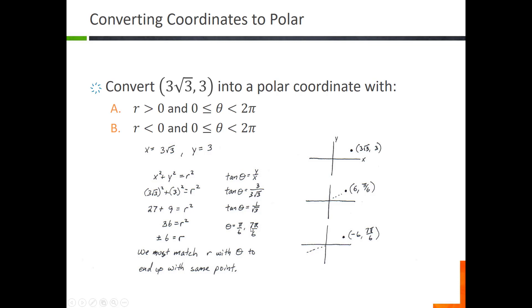We have two radius values and two angle values, and we need to know which goes with which. The original point three root three comma three is in the first quadrant. Pi over six is in the first quadrant, so we want the positive radius: six comma pi over six. Seven pi over six is in quadrant three, so we need the negative radius, because the negative radius means you go in the seven pi over six direction and flip 180 degrees into the first quadrant. So six comma pi over six and negative six comma seven pi over six are the two polar coordinates matching the given rectangular coordinate.